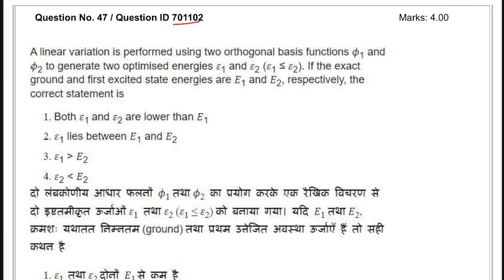The question is from quantum mechanics. It says that a linear variation is performed using two orthogonal basis functions φ1 and φ2 to generate two optimized energies ε1 and ε2, where ε1 is smaller than ε2. The exact ground and first excited state energies are e1 and e2 respectively. The options are: (1) both ε1 and ε2 are lower than e1; (2) ε1 lies between e1 and e2; (3) ε1 is greater than ε2; (4) ε2 is less than e2.